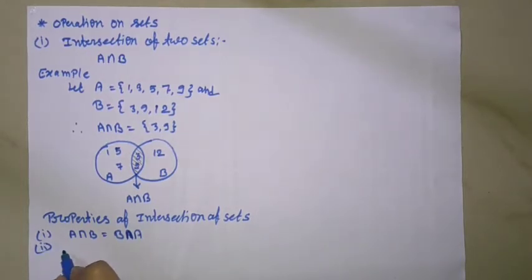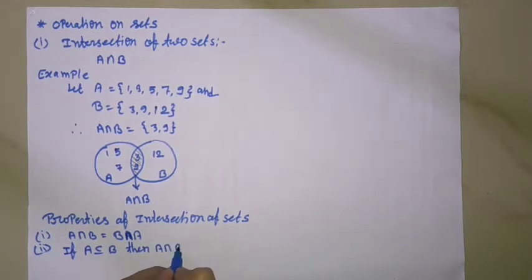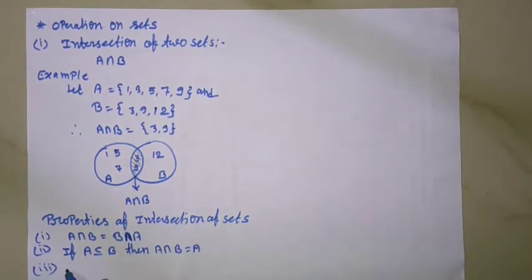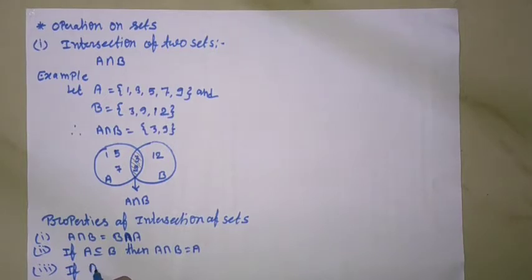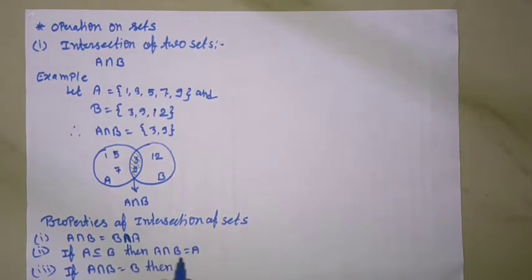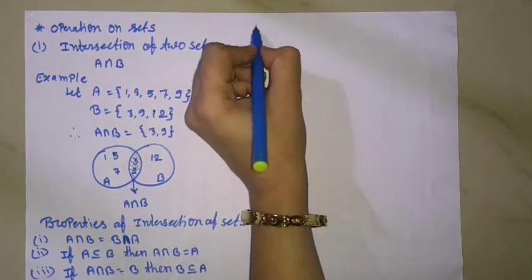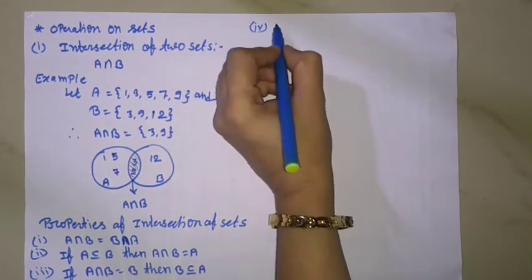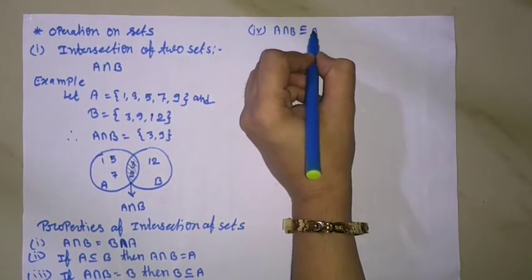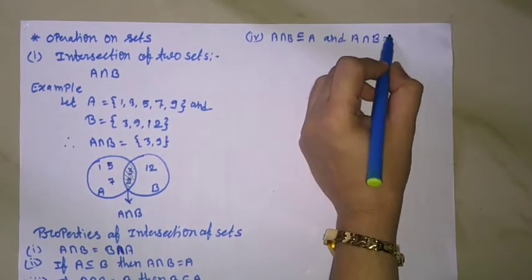Second: if A is a subset of B, then A intersection B equal to A. Third: if A intersection B equal to B, then B is a subset of A. Fourth: A intersection B is a subset of A, and A intersection B is a subset of B.